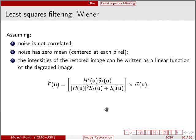The first filter is the Wiener filter. It assumes that noise is not correlated with the signal, that the noise has zero mean (centered at each pixel intensity value), and that the restored image intensities can be written as a linear function of the degraded image — making it a linear filter. To obtain the restored image F-hat, we compute this equation. We know G (the degraded observed image) and H (the blurring function, which must be known or estimated for all blur restoration methods).